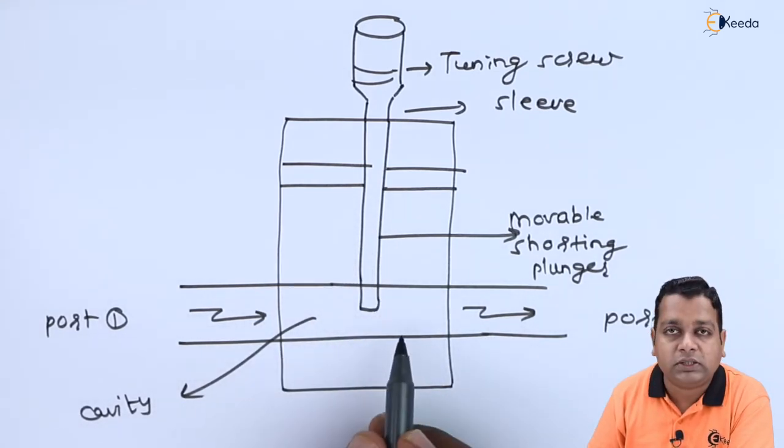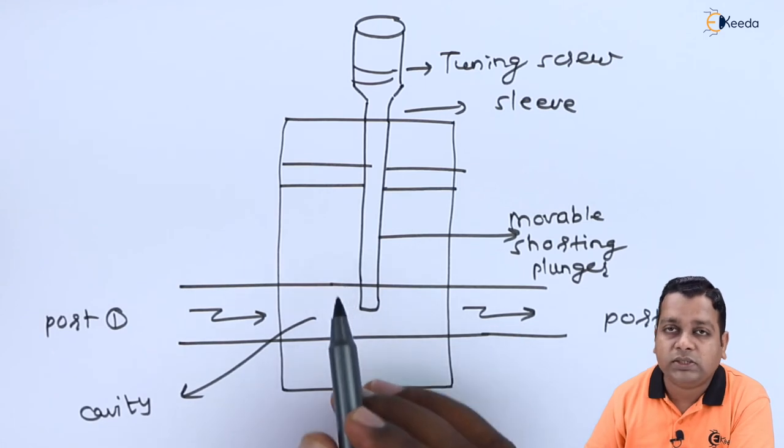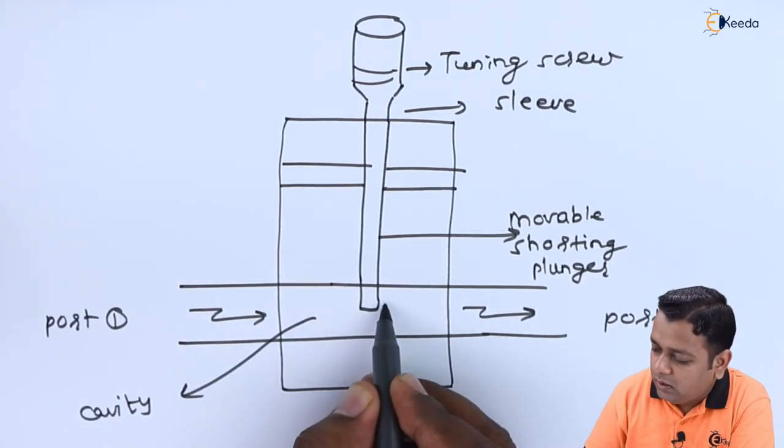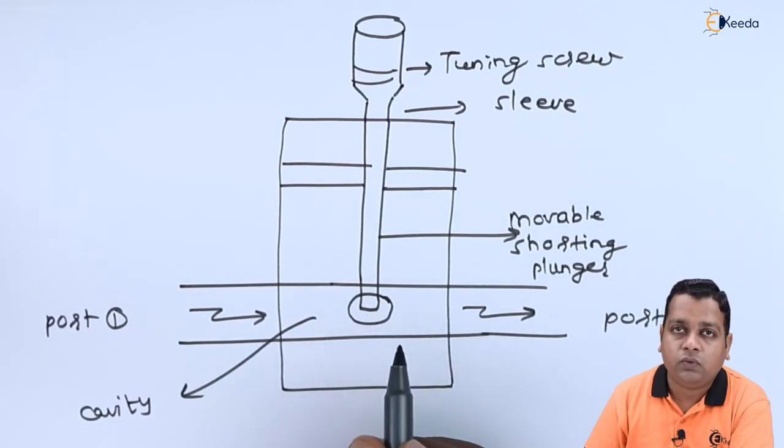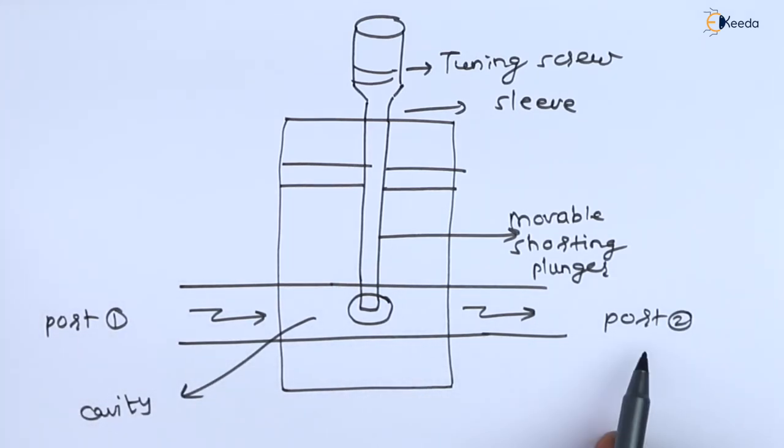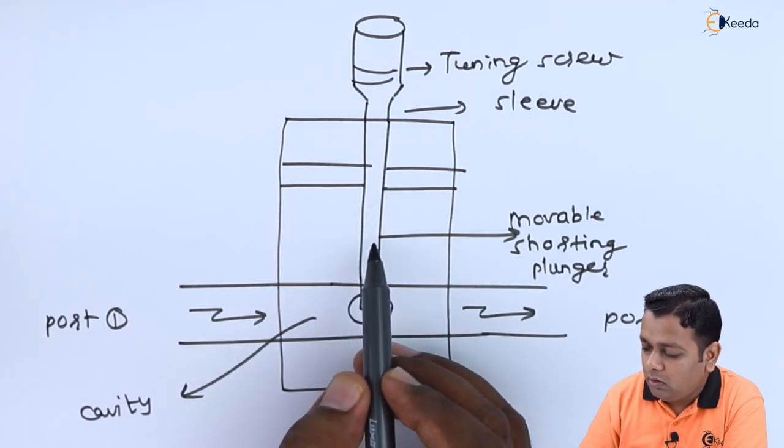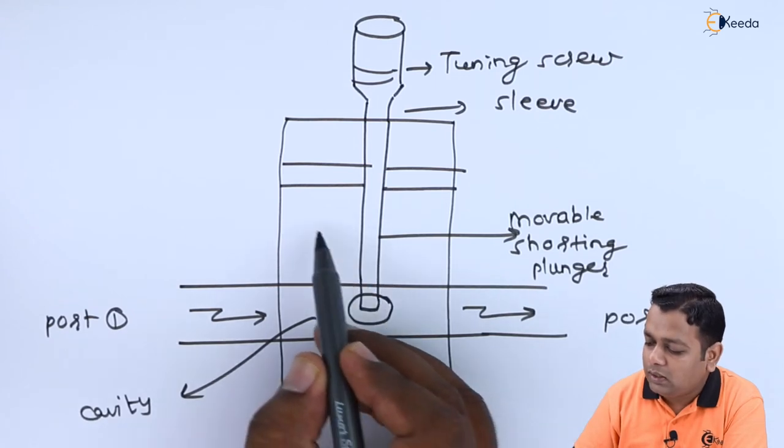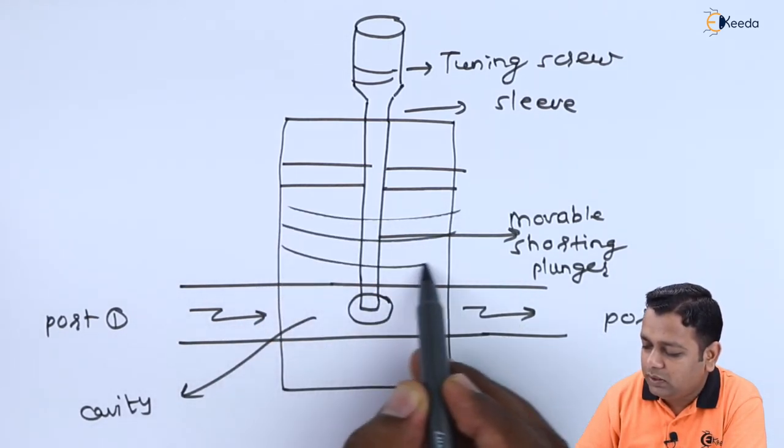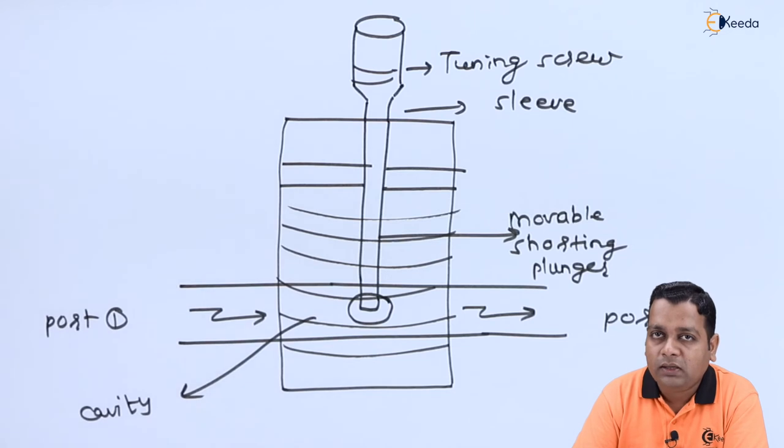The movement of this plunger can be mechanical type by the tuning screw. At the intersection between the rectangular waveguide cavity and the cavity of this particular frequency meter, there is the coupling hole. At the coupling hole, the interaction of the energies flowing from port 1 to port 2 can be noted. With the help of the tuning screw, we make changes to have resonance occur inside this cavity. The calibrated scales will give you the exact value of the frequency.